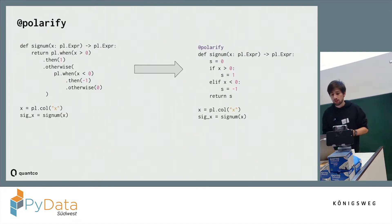Instead of having to write this function on the left manually, you can just add a function decorator to your signum function. And Polarify will then convert the AST of your function into a Polars expression.